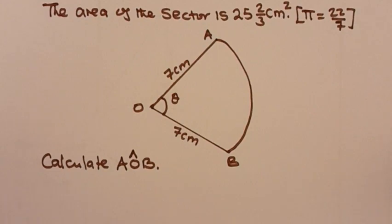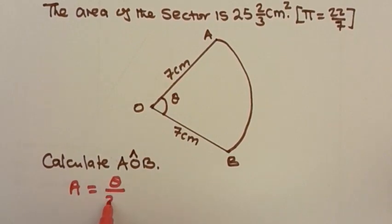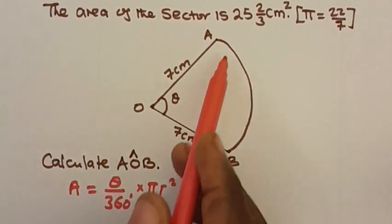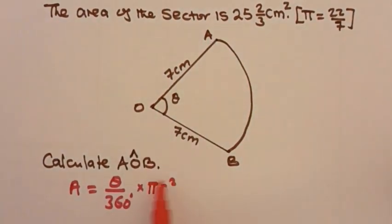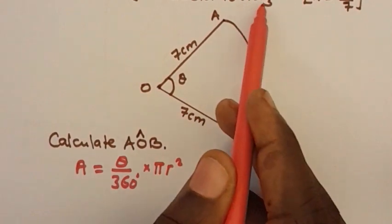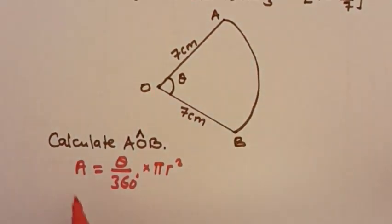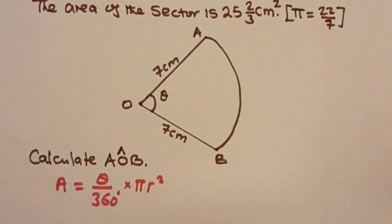To calculate the central angle theta, we are going to use the formula for finding the area of a sector from the previous video. The area of a sector is equal to theta divided by 360 degrees, times the area of the full circle — because a sector is just part of the full circle. We have been given the area as 25 and two-thirds square centimeters.